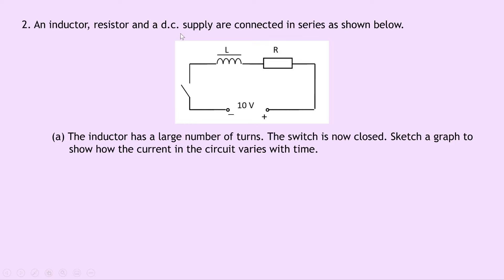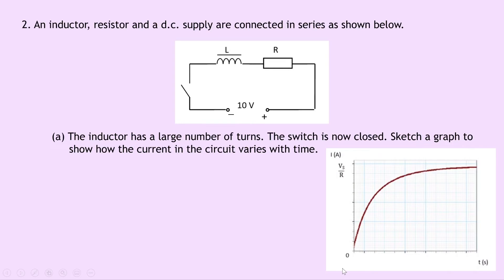Question 2 says an inductor, resistor, and a DC supply are connected in series as shown below. So we've got a switch, an inductor with inductance L, a resistor of resistance R, and a 10 volt DC supply. Part A says the inductor has a large number of turns, the switch is now closed. Sketch a graph to show how the current in the circuit varies with time. The current through the inductor will start off at 0 amps and then increase exponentially up to a maximum value set by Vs divided by R.